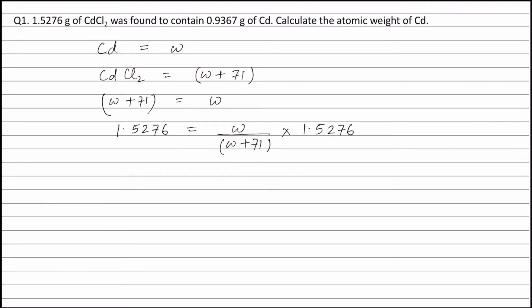According to the question, W divided by W plus 71, multiplied by 1.5276, is equal to 0.9367 grams. Solving this,